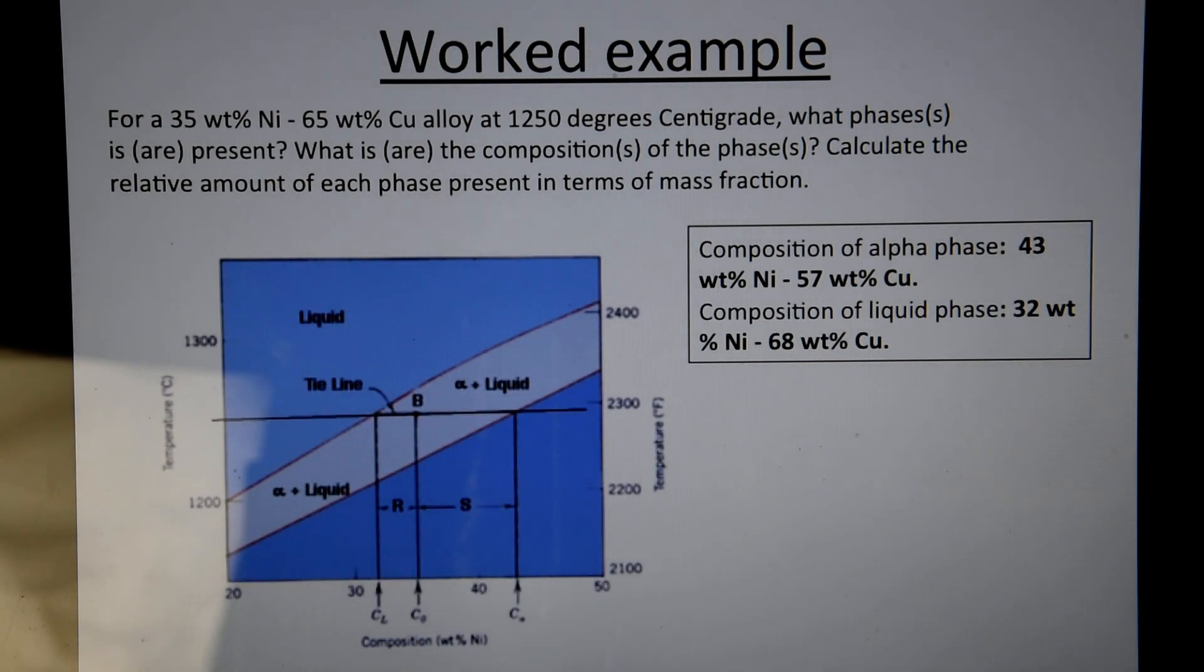Now to start with, this is an expanded image of the copper-nickel phase diagram. What you have to do first is take note of this temperature, 1250 degrees Celsius. You have to draw a horizontal line here, which intersects the liquidus line and the solidus line. This line is called a tie line.